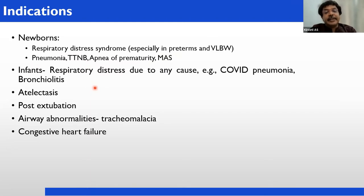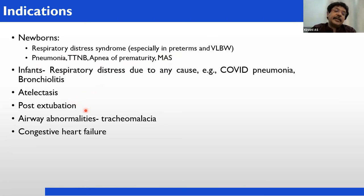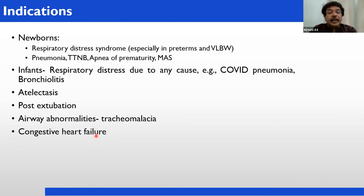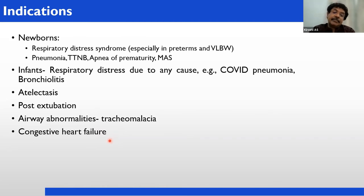In infants, CPAP is indicated in respiratory distress from any cause — viral pneumonias, bacterial pneumonias, including COVID pneumonias, bronchiolitis, atelectasis. It is also used when weaning a child from a ventilator — connect to CPAP before coming off the ventilator. In cases of airway abnormalities like tracheomalacia (weakness of the trachea), CPAP can be used. Some cases of congestive heart failure can also be managed with CPAP. These are the indications to start CPAP.